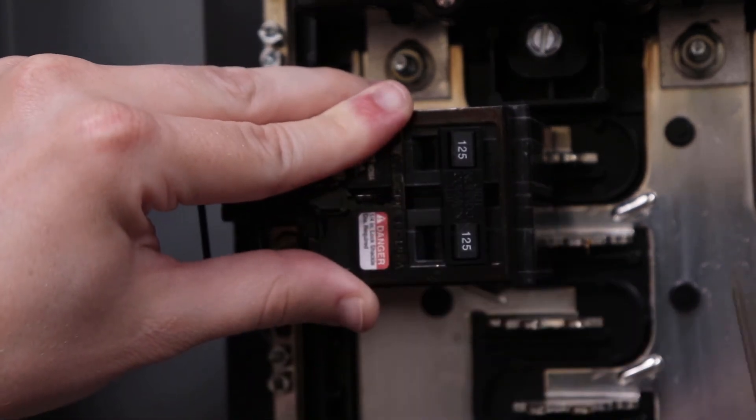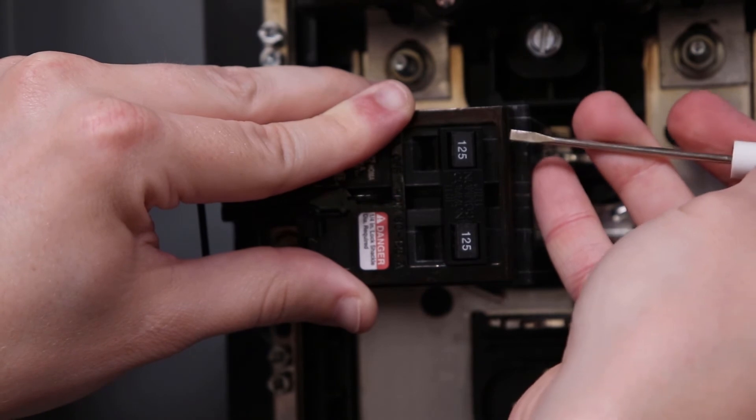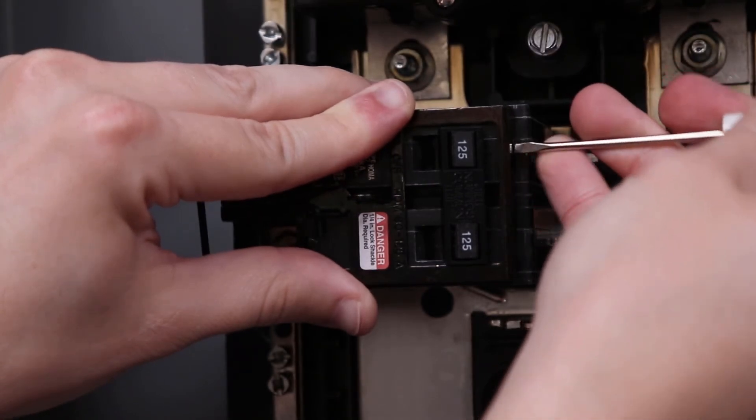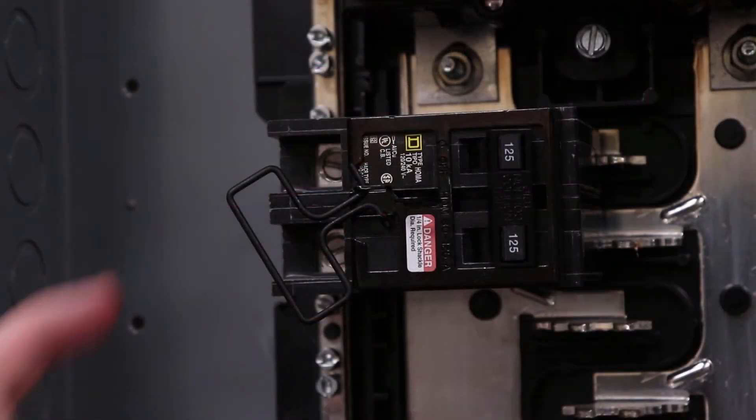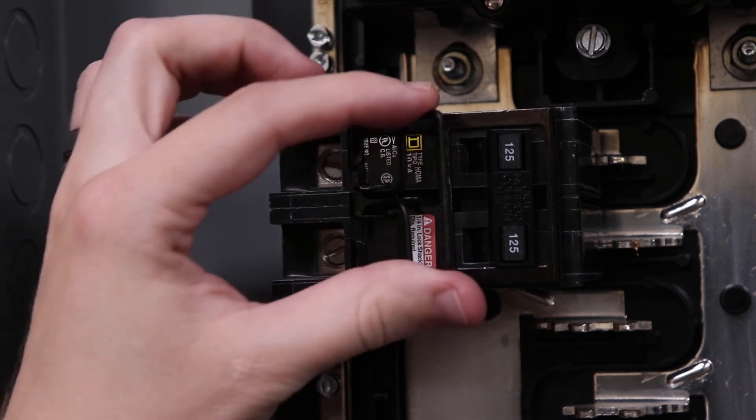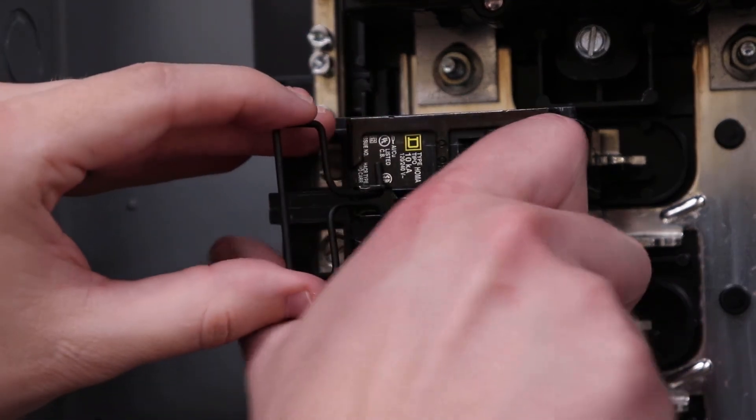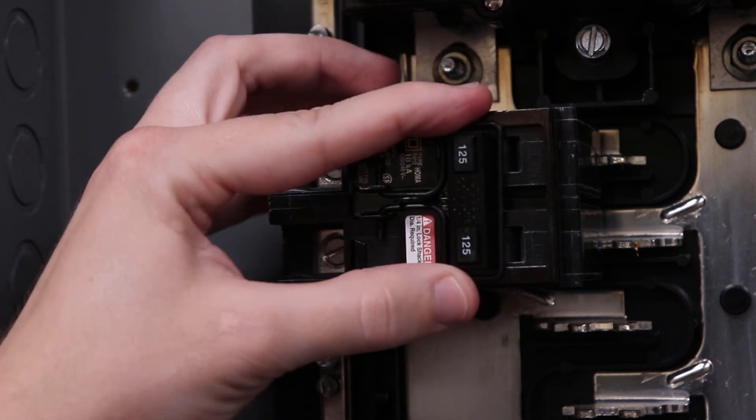Then push the locking prongs into the tabs on the on side of the breaker. You can now lock the breaker in the on or off position.